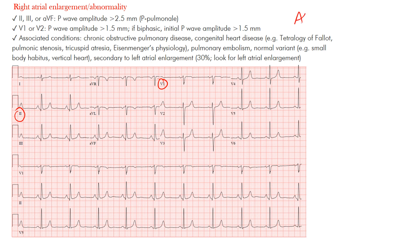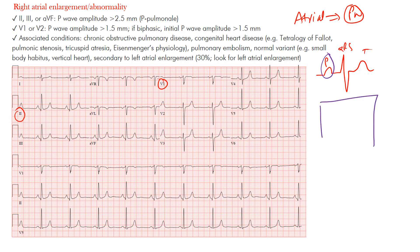When looking for atrial abnormalities, we focus on the P-wave — the P-wave is the first complex, followed by the QRS and T-wave. We're looking specifically for atrial enlargement: is the right atrium enlarged? Remember, the heart has four chambers: the right atrium, left atrium, right ventricle, and left ventricle.